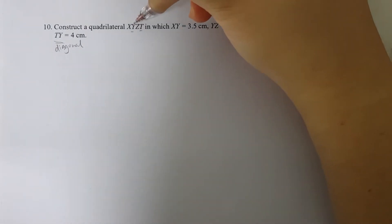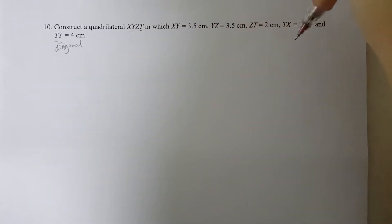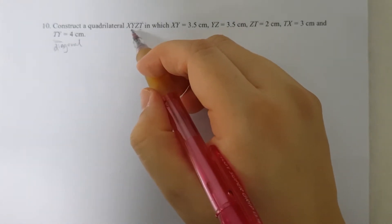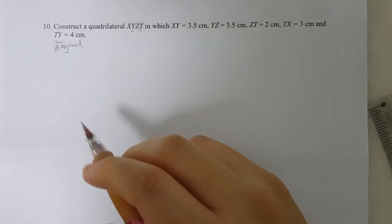So the other lengths, XY, YZ, ZT, and TX. The points go from one point to the other point, so I know it's a length of the side. But TY goes from T to Y, so I know it's a diagonal length.